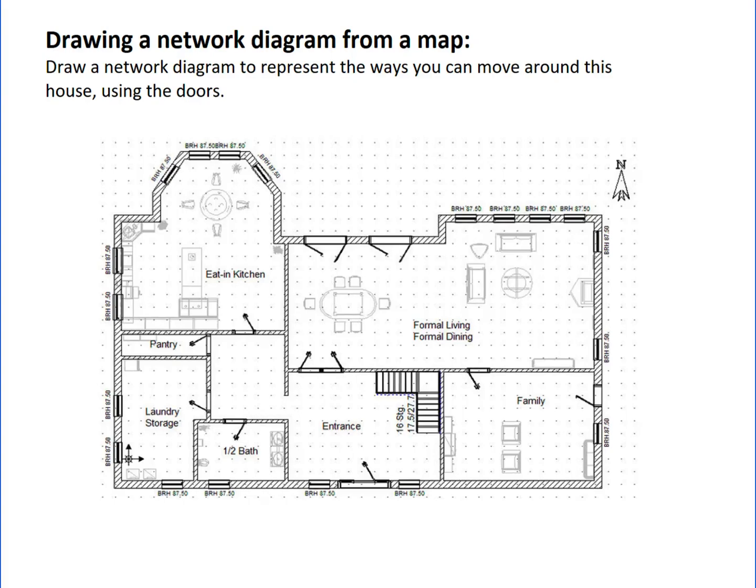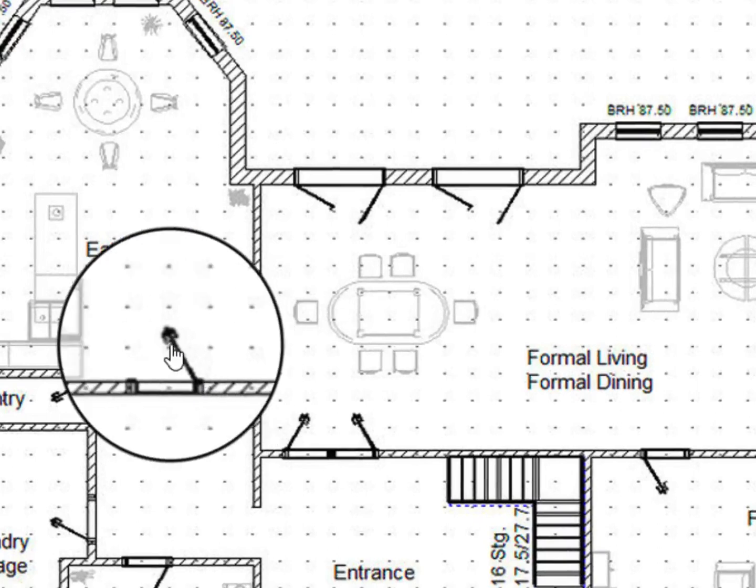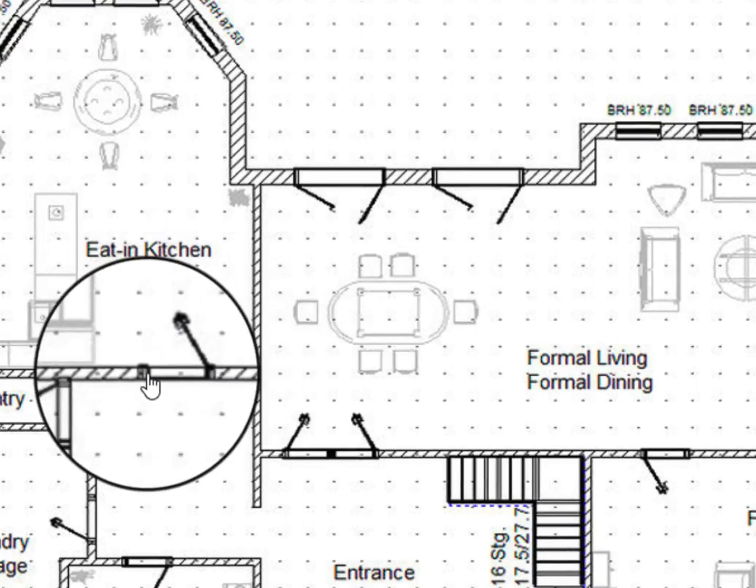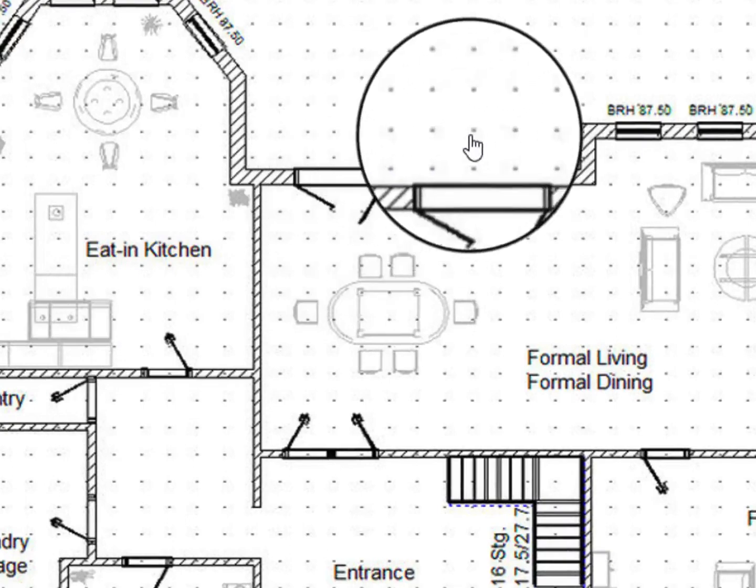So doors are represented on this map by little lines coming out like this, so this door would shut into this gap, and we've also got some doors to outside that we should notice here and here.